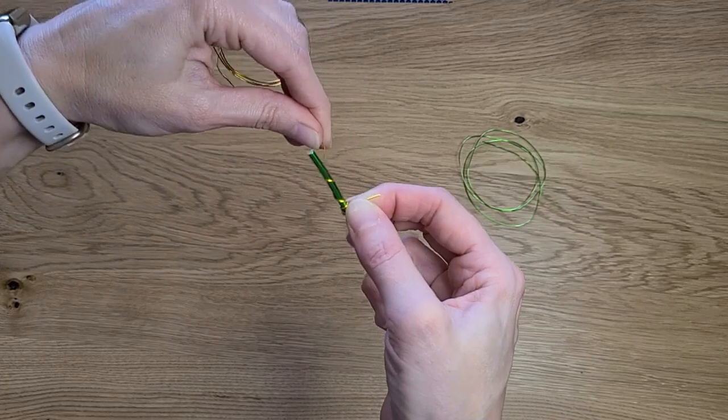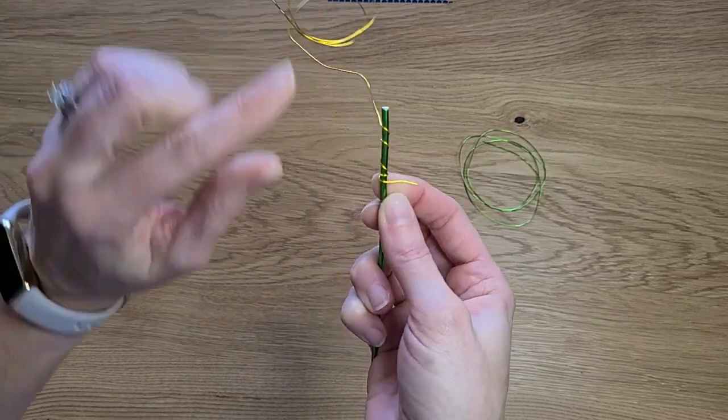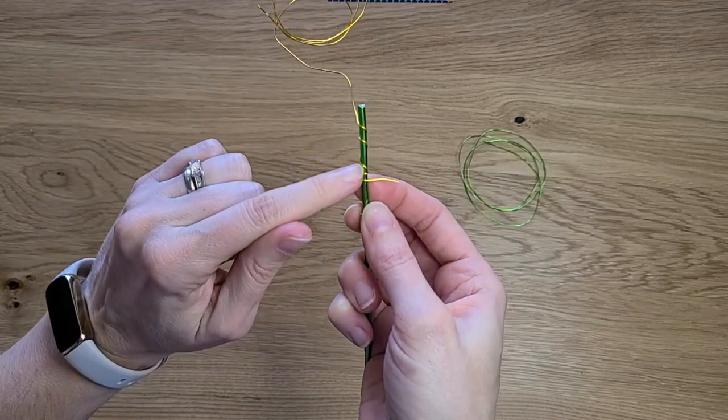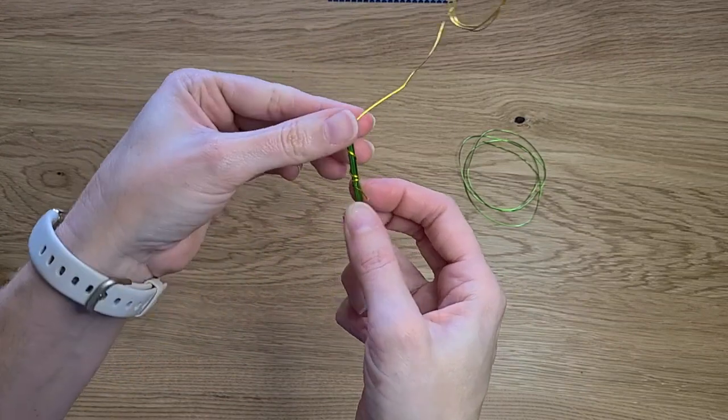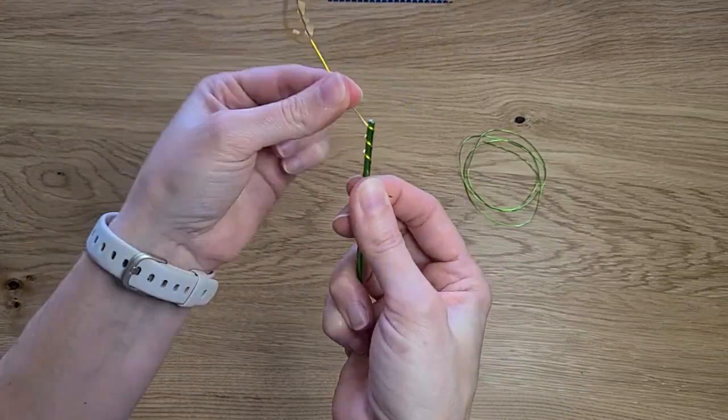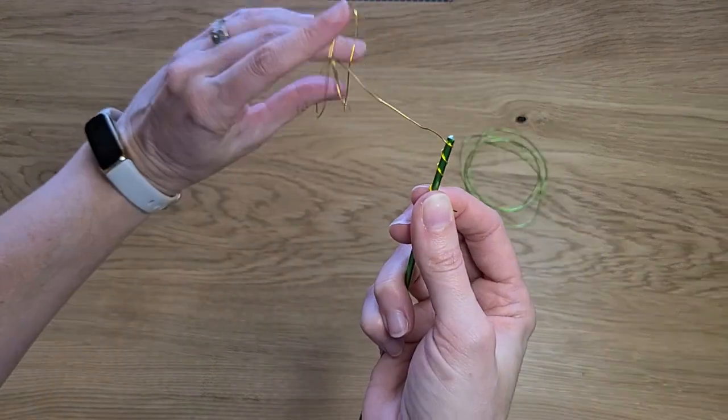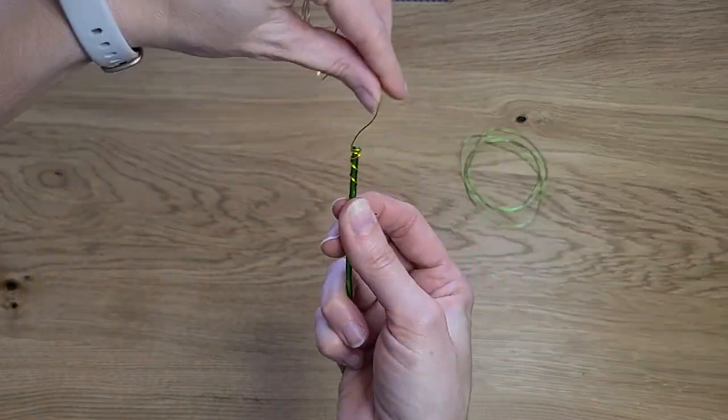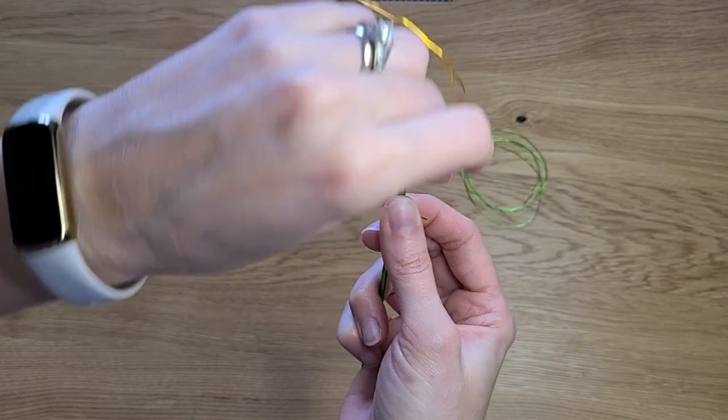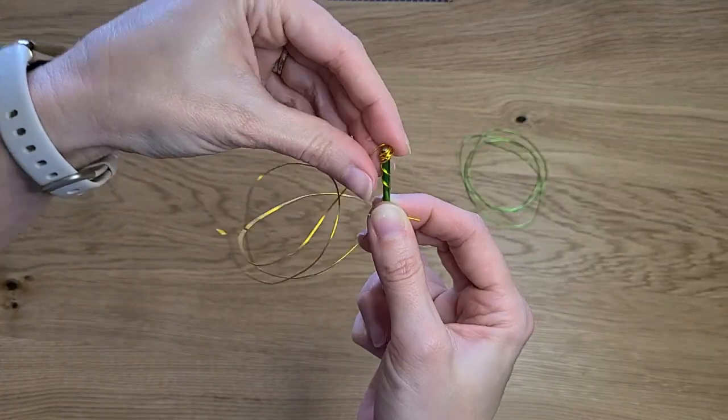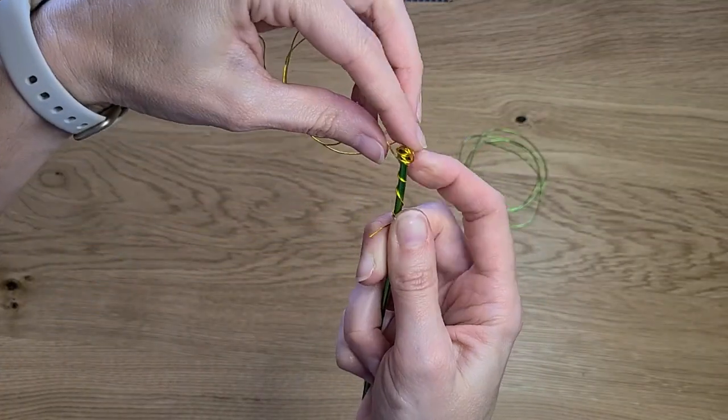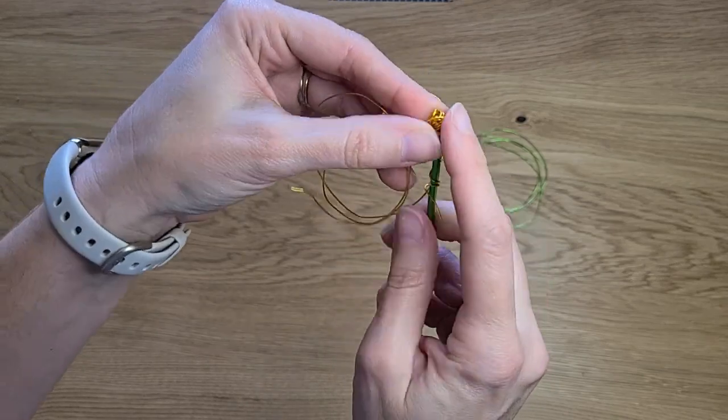Wrap tightly, but don't stack it tightly up to the top of your stem. At this point, you're going to want to wrap loosely and messily to kind of give it a rounded shape at the top.